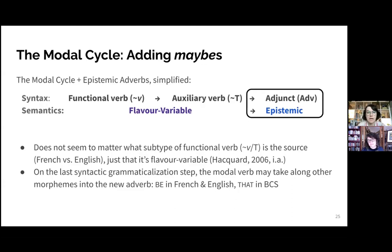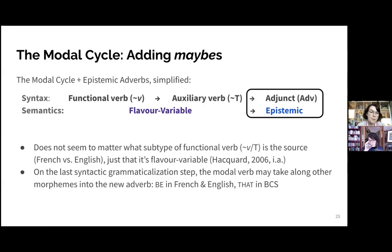It does not seem to matter what subtype of functional verb the source construction is, as we can see from French and English. By the time these arose in English, there were already ongoing changes in the English functional verb structure. But French created the adverb much earlier, and French still has a lower functional verb than the English modal verbs. On that last syntactic grammaticalization step, the modal verb may take along with it other morphemes into the new adverb — we see this with the 'be' morpheme in French and English, and with the 'that' morpheme in BCS. In other languages like Romanian and Polish, we just see the bare verb in its third singular or default form becoming the adverb.